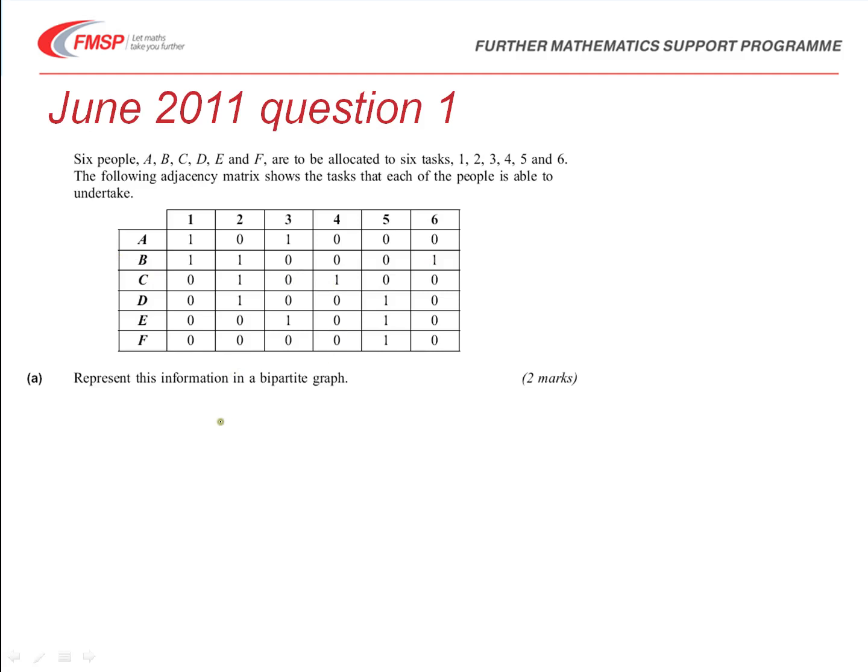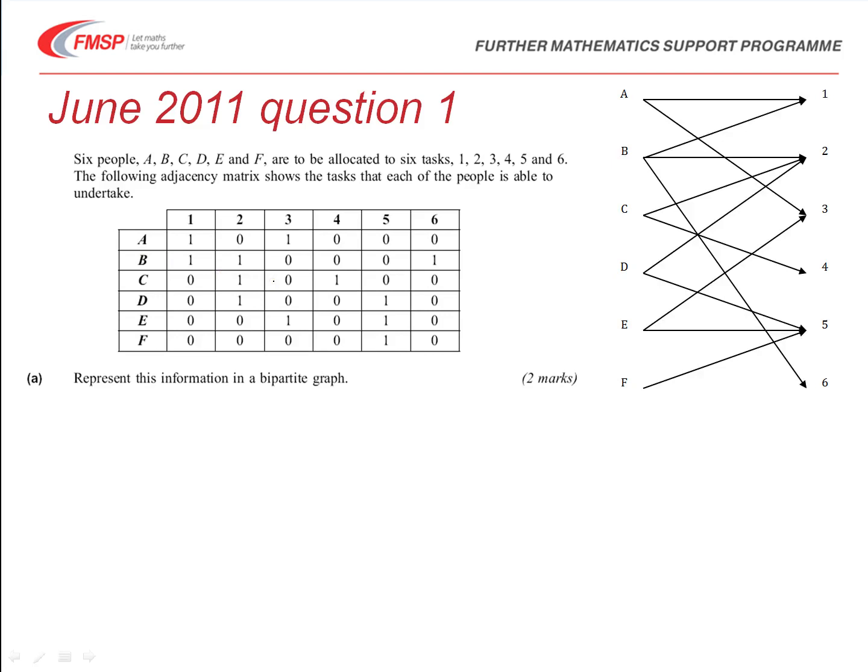And in the first part of this question we are asked to represent this information in a bipartite graph, which is where we set up A through F as one set of six on the left hand side, and then 1 to 6, the tasks, on the right hand side, and then a line is drawn between each pair that is possible. So A to 1, A to 3, B to 1, B to 2, and so on. And here's one I did earlier. And you can see we've got the six tasks, 1 to 6, the six people involved, A through F, and an arrow or a line connecting each of the possible tasks to the people who can do those tasks.